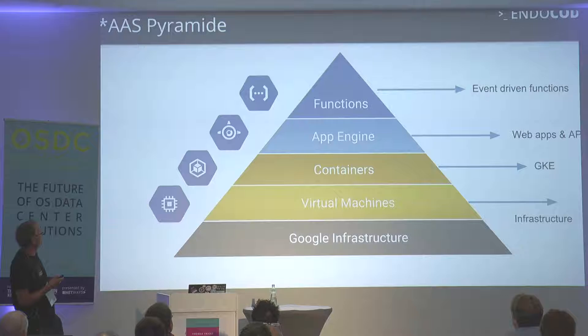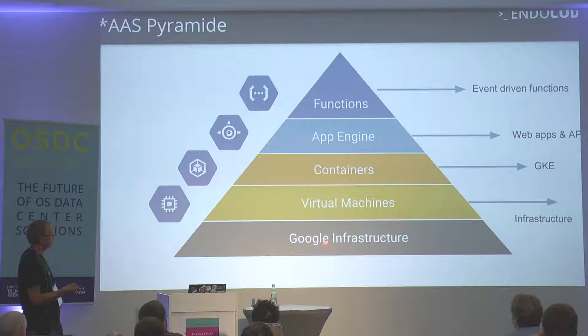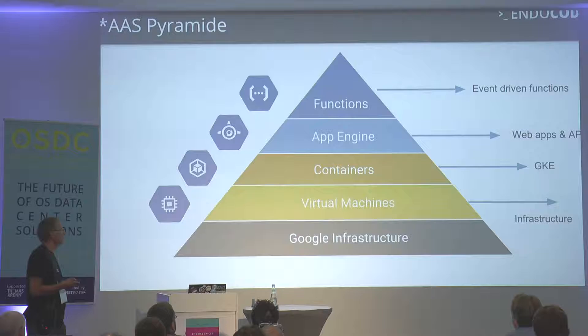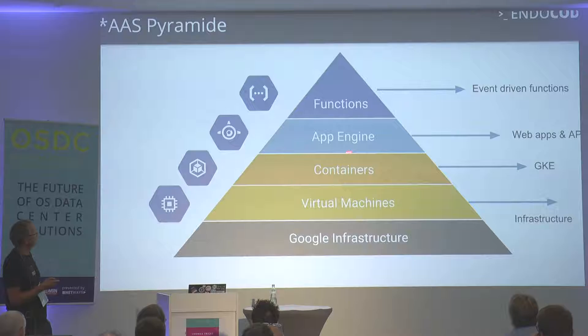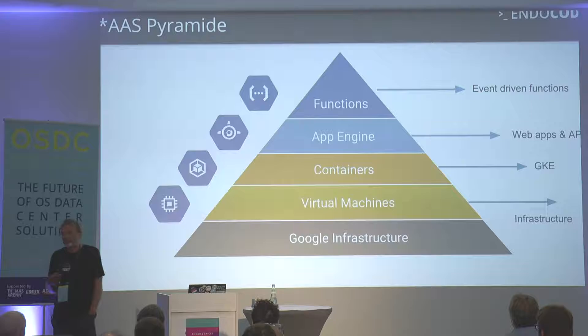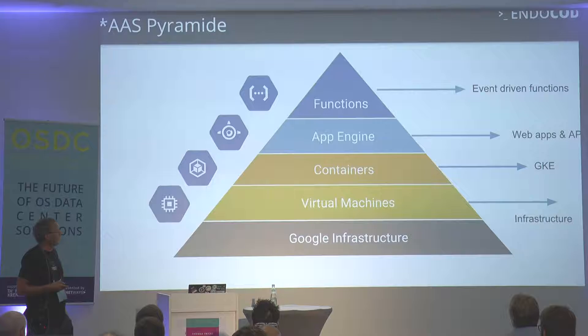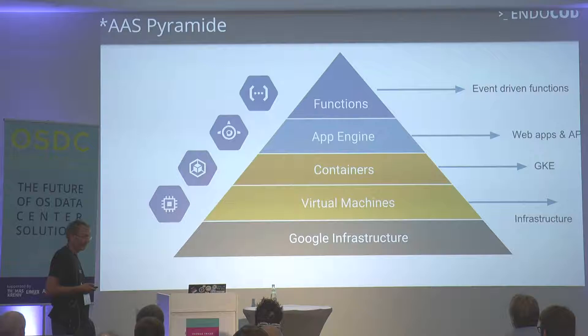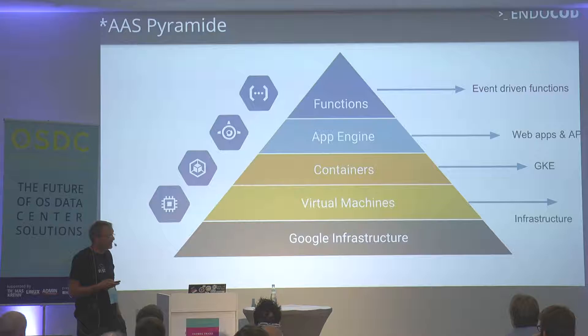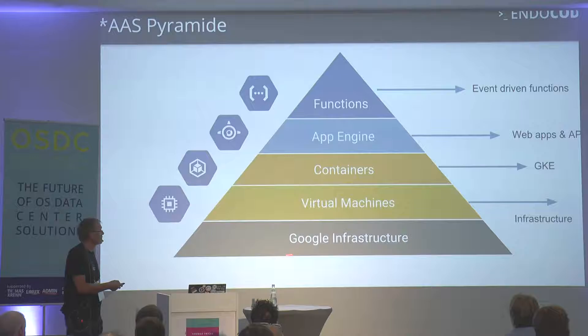We're Google partners, so here is how Google sees it. You have some infrastructure — not necessarily Google, could be Amazon or your own — then virtual machines, then containers, and something like App Engine as a simplified container. The nirvana of computing is serverless or functions, but all of that still needs the layers below. It's an idealization that drops all knowledge about the underlying tiers.